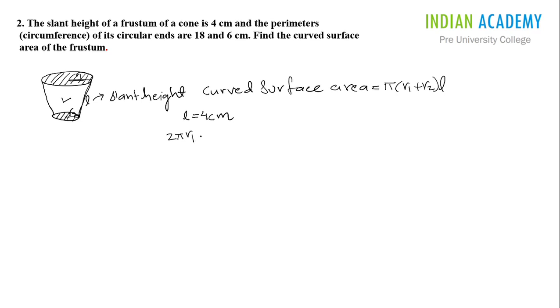2πr1 which is given to you as 18 centimeters. And the perimeter of the bottom circle which will be 2πr2, it is also given to you as 6 centimeter.